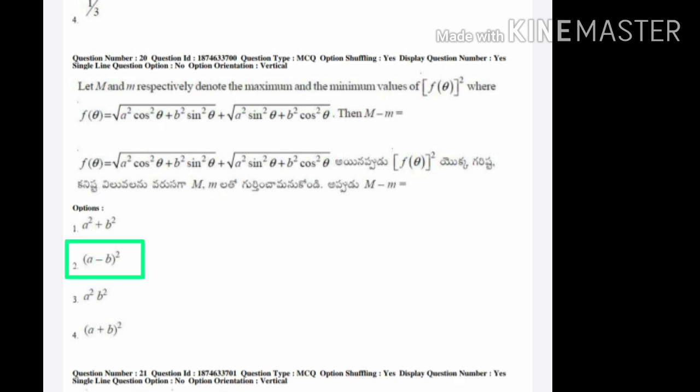In question number two, you can also see that option two and option four are the same — the only difference is the sign. Here it is given as minus, and here it is given as plus. So you can directly eliminate option one and option three and choose any one option between two and four. The correct answer here is option number two. All these questions have been taken from the 2019 APM SET paper.